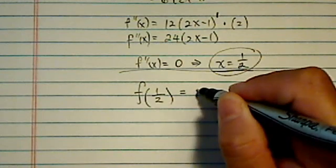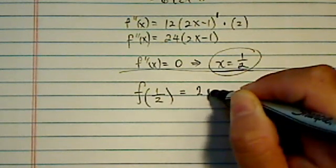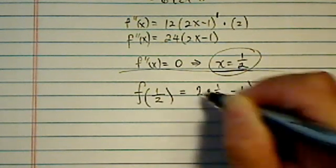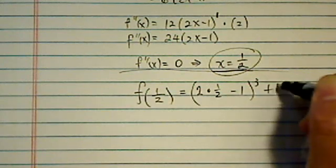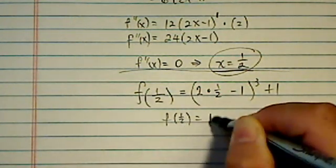x evaluated at 1/2. Then we have 2 times 1/2 minus 1, the whole thing, cubed plus 1. And guess what? f(1/2) is equal to 1.